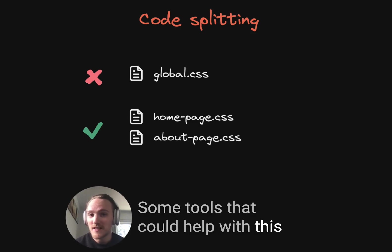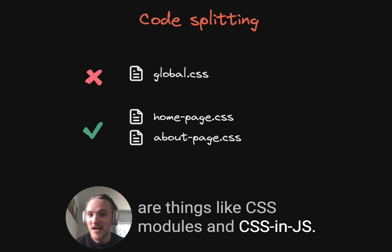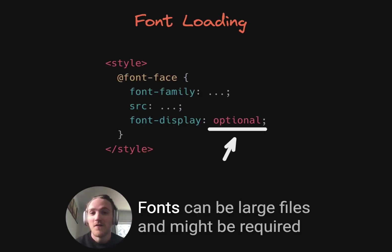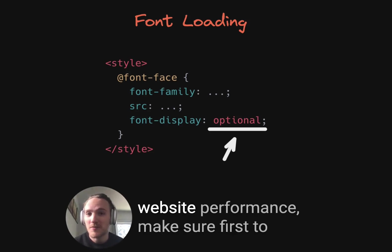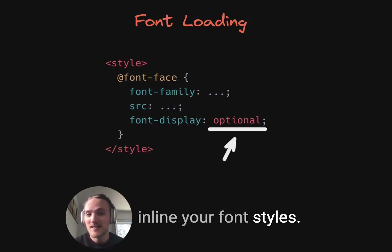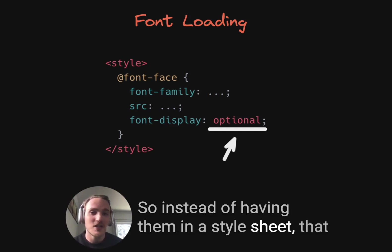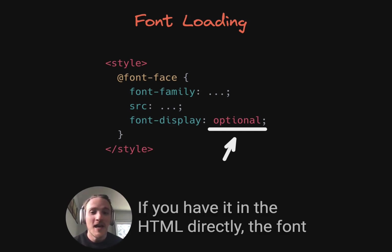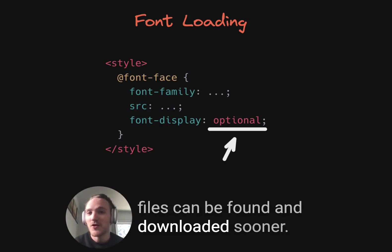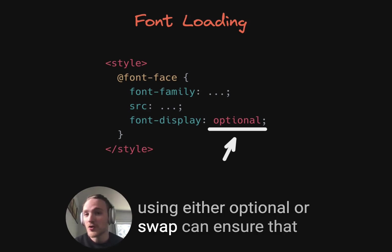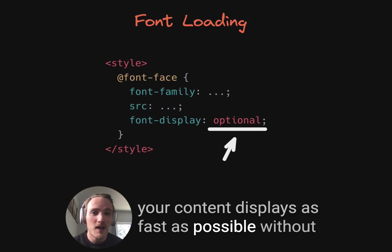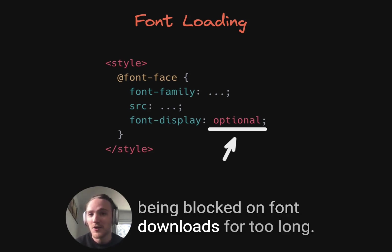Some tools that can help with code splitting are CSS modules and CSS-in-JS. Second is font loading. Fonts can be large files and might be required to download before text is visible on your page. To make sure this doesn't hurt your performance, first inline your font styles — so instead of having them in a stylesheet that first gets downloaded and then the font files can download, if you have it in the HTML directly, the font files can be found and downloaded sooner. Second, make sure to set the font-display property. Using either 'optional' or 'swap' can ensure that your content displays as fast as possible without being blocked on font downloads for too long.